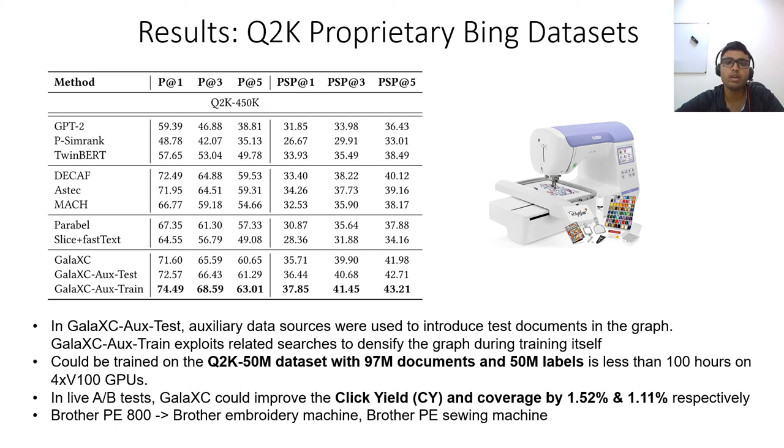As an example for the query Brother PE800, Galaxy could exploit its graph to learn that semantic concepts like sewing and embroidery are related to the query, which can't be inferred based on the query text itself. Galaxy could thus bring new keyword matches like Brother Embroidery Machine and Brother PE Sewing Machine, which were not captured previously by other techniques in production.